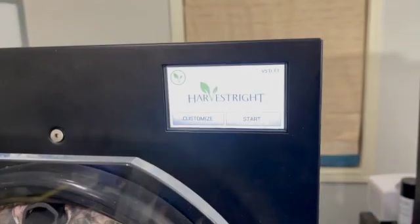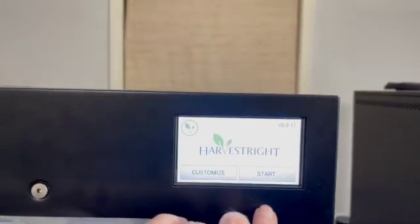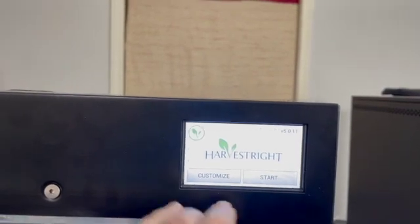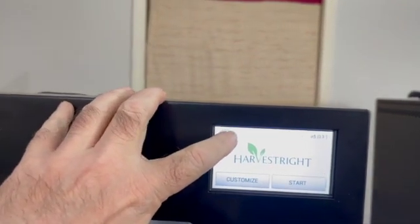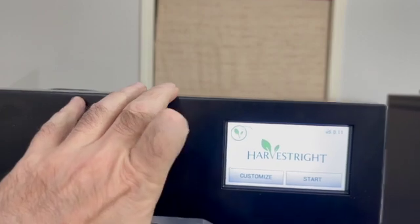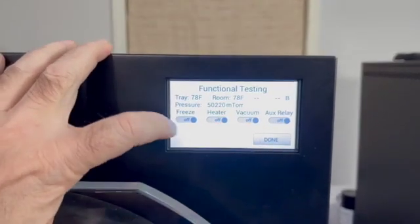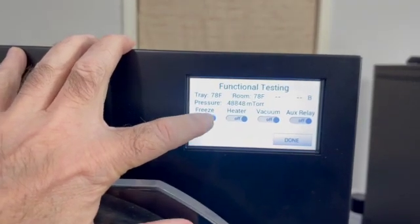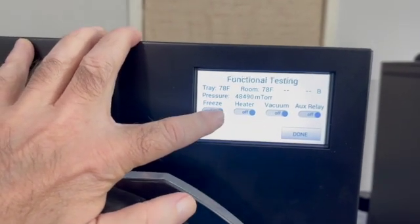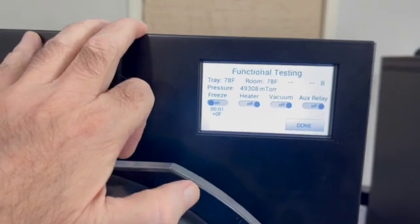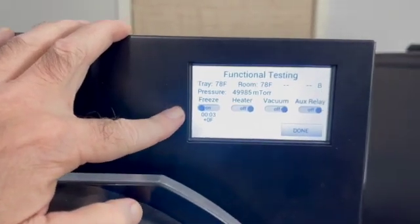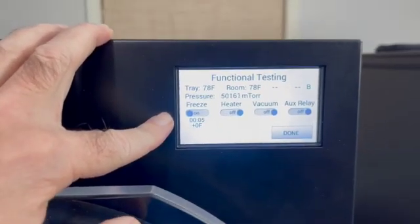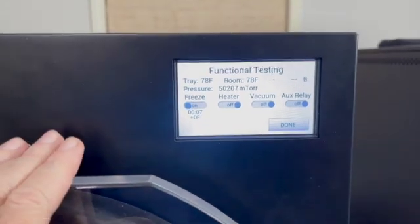Okay, so here we are, right here. So Harvest Right, we're going to actually go up here and hit the leaf. And this is the functional testing. So the first thing we want to do is freeze the chamber. So I'm going to turn this on. So we'll come back, it takes about a half an hour to get the chamber below freezing.